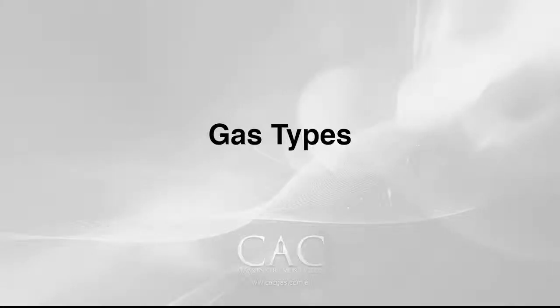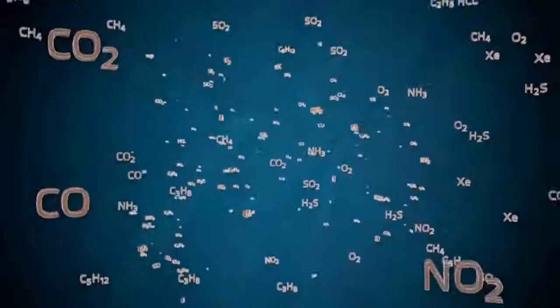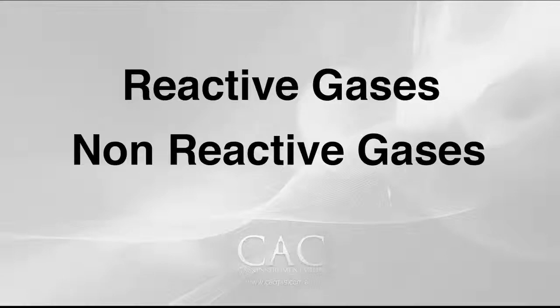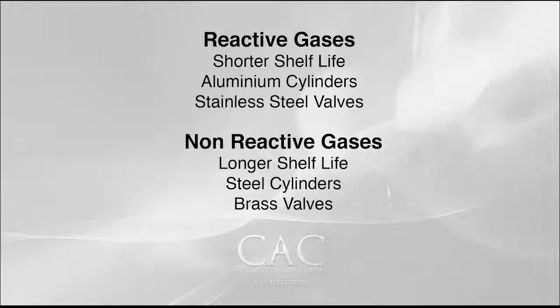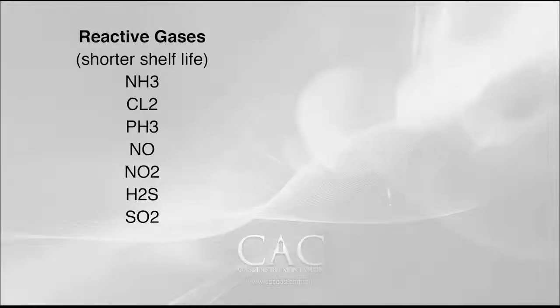There are many factors to consider when determining the shelf life of a calibration gas. We can divide all gas mixtures into two types: reactive and non-reactive. Reactive gas mixtures will have shorter shelf lives than non-reactive mixtures because they are unstable. They are typically filled in specially prepared aluminium cylinders with stainless steel valves. Reactive calibration gases include H2S, NO2, ammonia, and chlorine, among others.